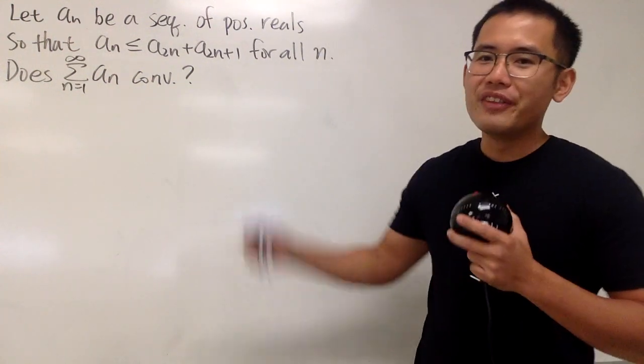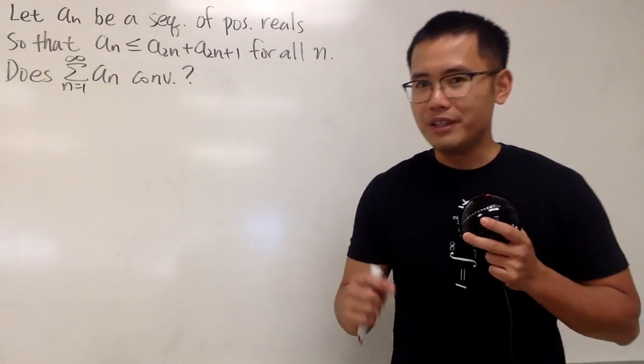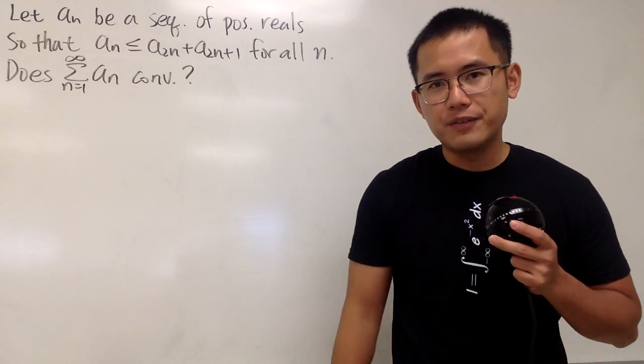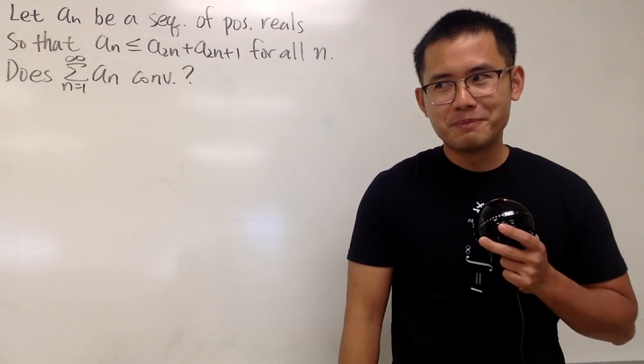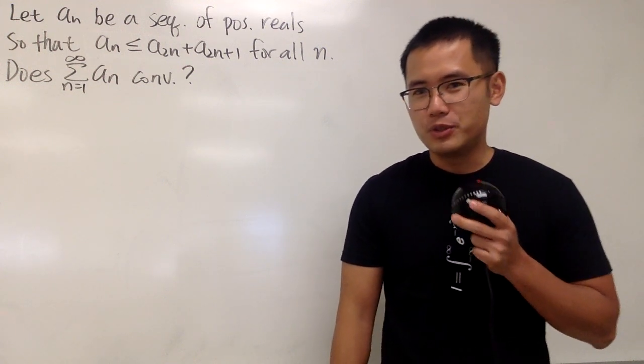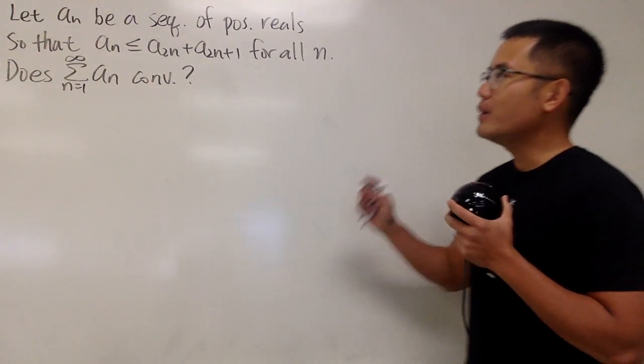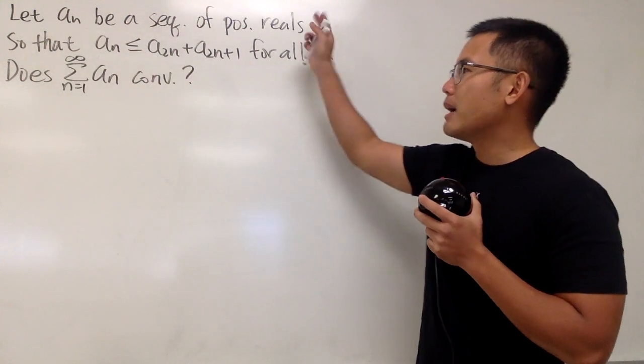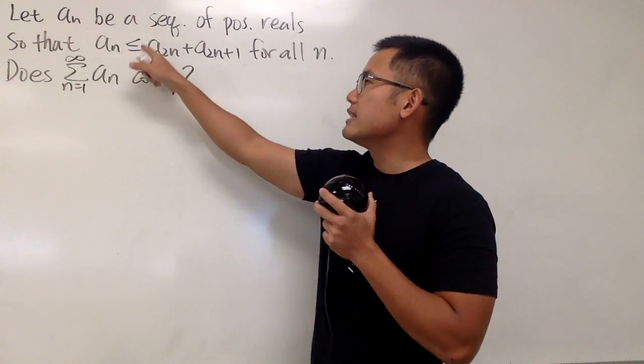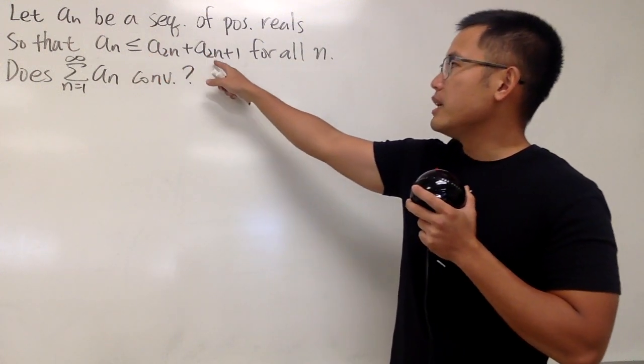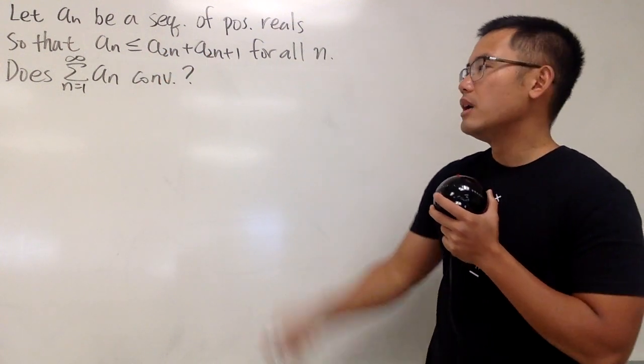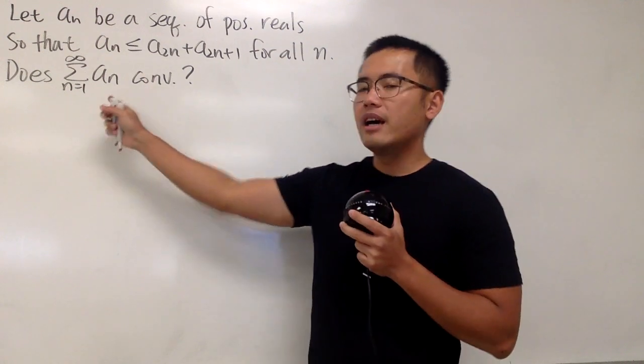Okay, let's do some math for fun! Here is another pretty easy question from the Putnam exam, back in 1994. I wasn't even born yet. Just kidding. Anyway, here we have the question. aN being a sequence of positive reals, so that aN is less than or equal to a2N plus a2N plus 1 for all N, and the question is, does aN converge?